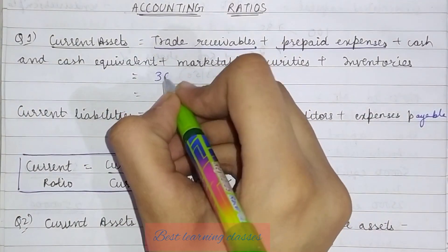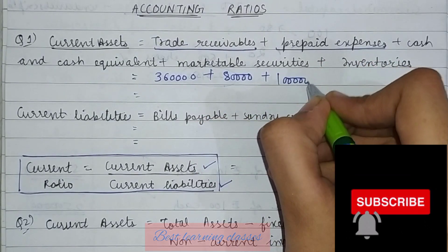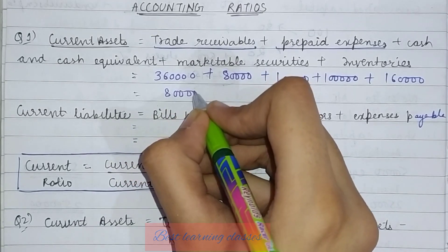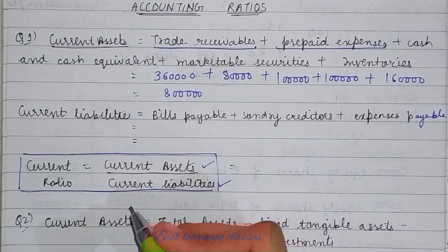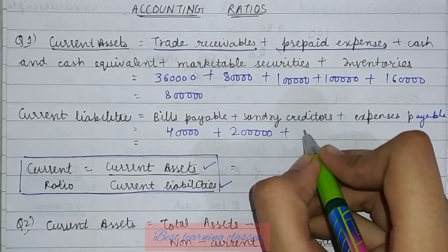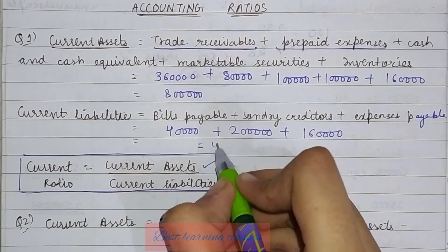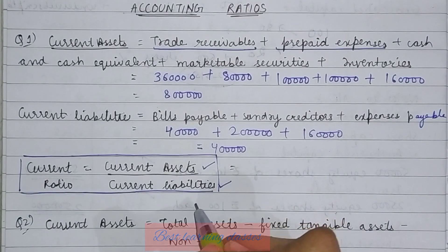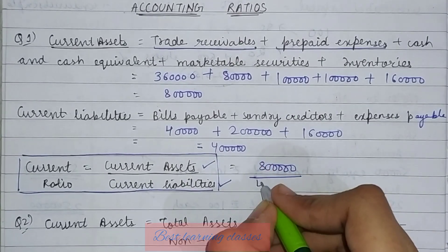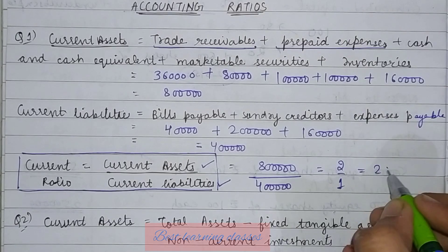Trade receivables: 3,60,000. Plus prepaid expenses: 80,000. Plus cash and cash equivalents: 1,00,000. Marketable securities: 1,00,000. And inventories: 1,60,000. Total current assets come to 8,00,000. Then in current liabilities: bills payable 40,000, sundry creditors 2,00,000, and expenses payable 1,60,000. Total current liabilities: 4,00,000. Current ratio = 8,00,000 / 4,00,000 = 2:1.